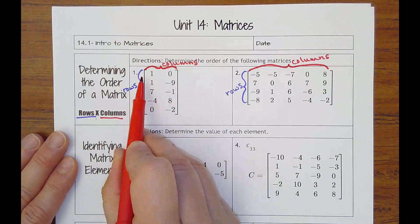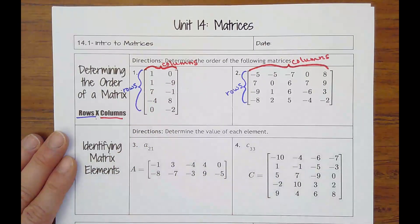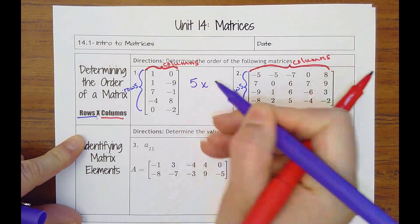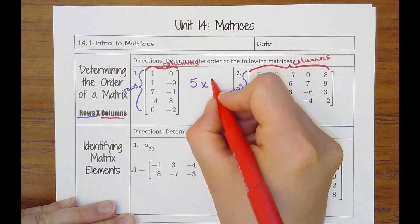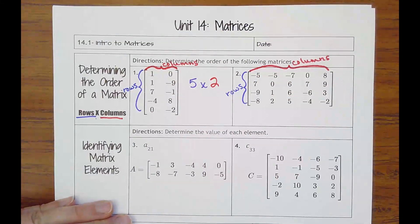So we have one, two, three, four, five rows by—and then the columns is the vertical—by two. So this is called a five by two matrix.